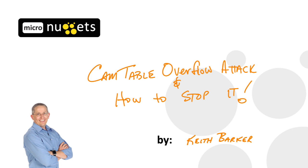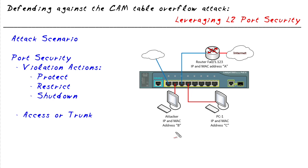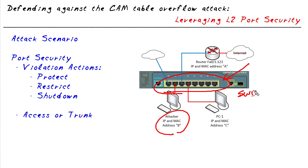CAM Table overflow attacks and how to stop them. Imagine an attacker or a disgruntled employee connected to the network who decides they want to eavesdrop on all conversations happening on a switch. The challenge is that a switch forwards traffic only to the ports that need it, so an attacker's machine wouldn't normally receive that traffic. A very easy way to trick the switch is to perform a CAM Table overflow attack.